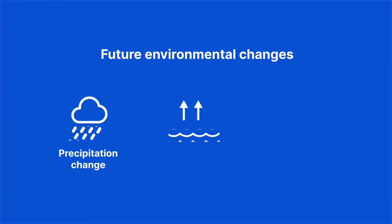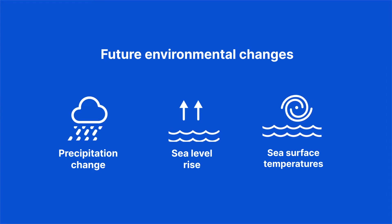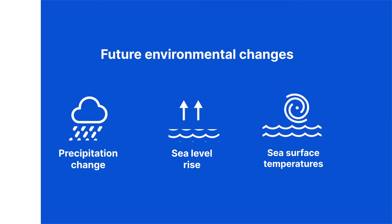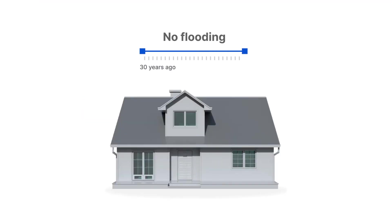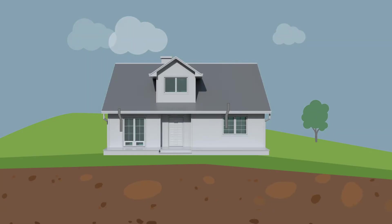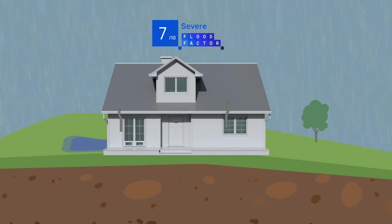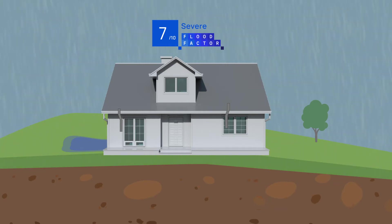Flood Factor also takes into account how flood risks will change over time with sea level rise and atmospheric changes over the next 30 years, which means even a property that hasn't flooded in the recent past could still face flood risk in the future. Even a property located high atop a hill could have a relatively high flood factor if it's in an area where heavy rain events are expected to become worse and more frequent over the next three decades.